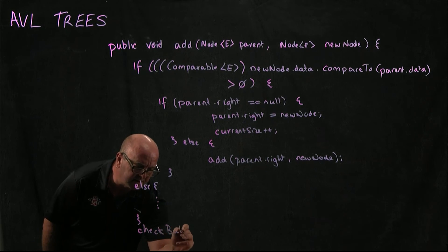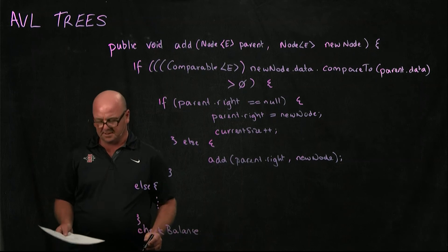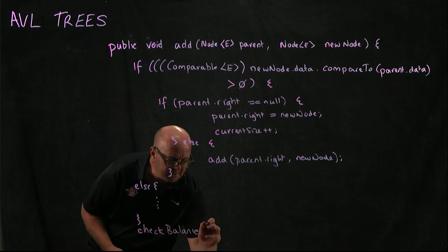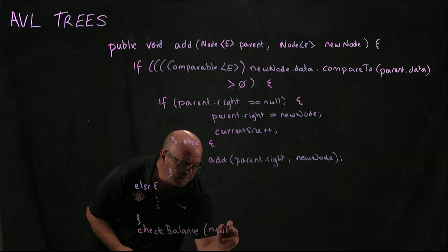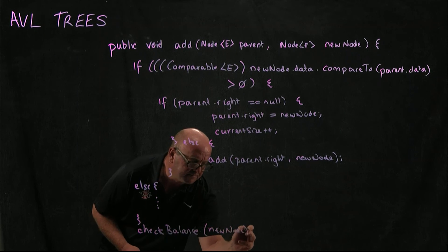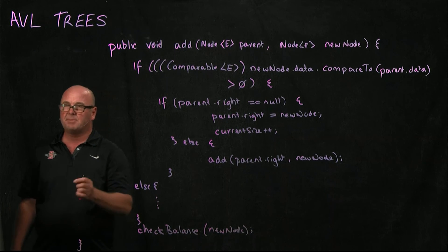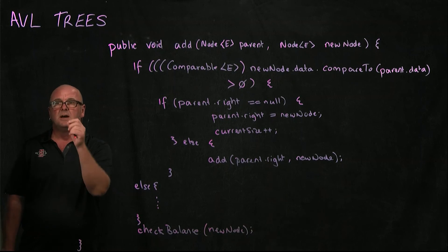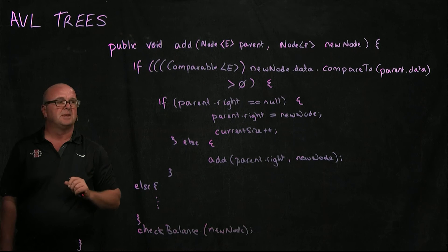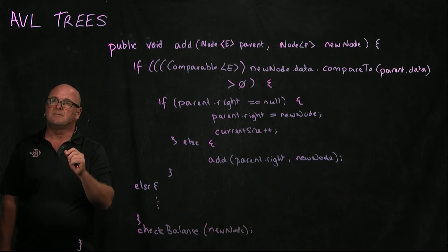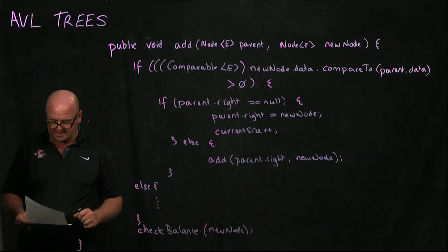And so we're going to call our check balance method, and we're going to call it on our new node. And our check balance method will start at new node and go up the tree and set everything, make sure that everything is correct.